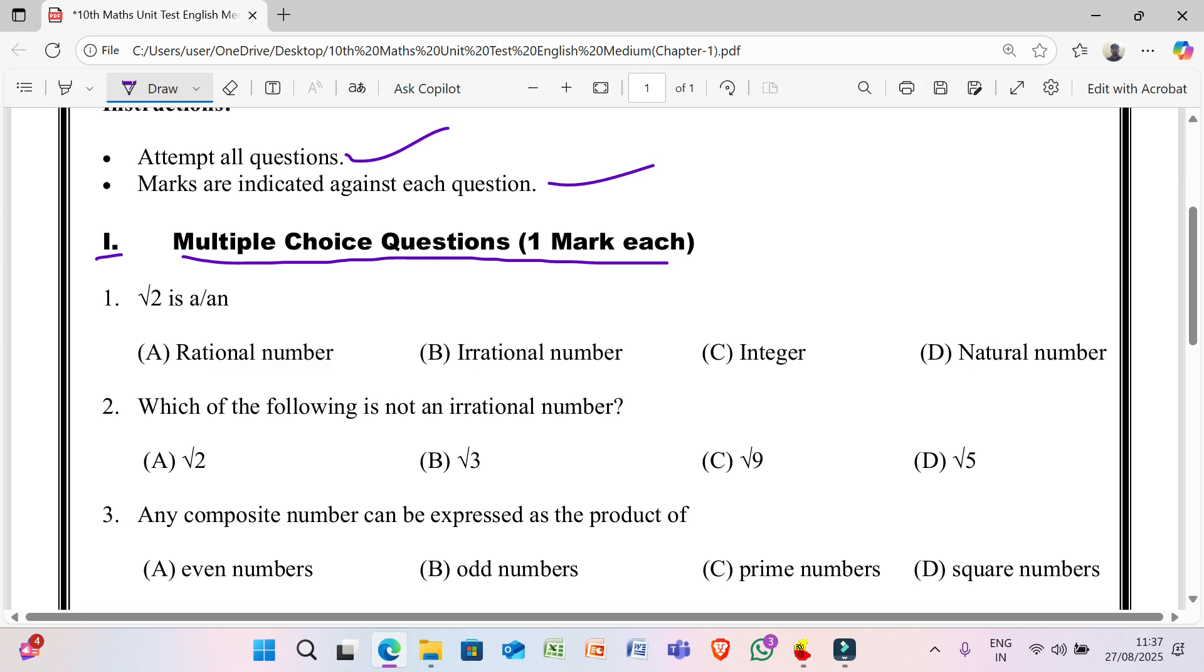1st question: √2 is A or N. A) Rational number, B) Irrational number, C) Integer